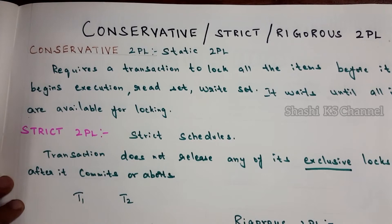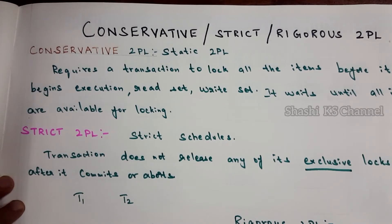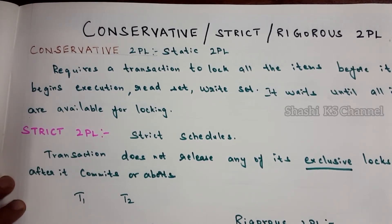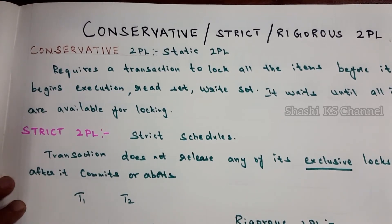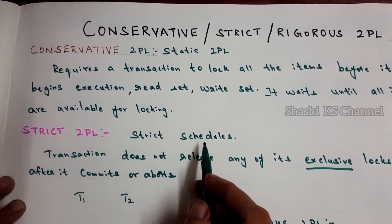Let us say if one transaction has already got an exclusive lock on a particular data item and some other transaction is trying to read or write that data item. This data item has been written by the transaction but it is not yet committed. In such a case, other transactions will not be able to read or write such data items until that operation has been committed by the previous transaction. That is why strict 2PL always leads to a strict schedule for recoverability.